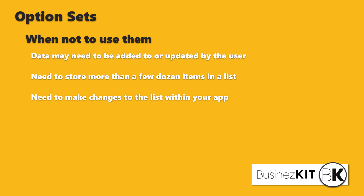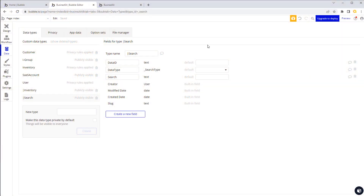If you have a coding background, option sets are very similar to enumerated types, where you store static options in your code. That covers option sets - I hope that explains it well enough. If not, please leave something in the comments and I'll try to get back to you. Thanks for watching and sticking with me on this series - see you in the next one.